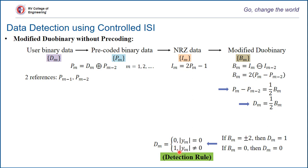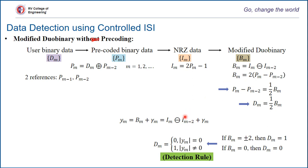So this is going to be our detection rule for modified duobinary with precoding. Please note the correction: this particular video is about modified duobinary with precoding. ym is detected when bm is transmitted. bm is nothing but im minus im minus 2, from the transmission logic. It is the subtraction of two sinc pulses which generates ym, and this is the statistic at the output of the receiver from which we decode.